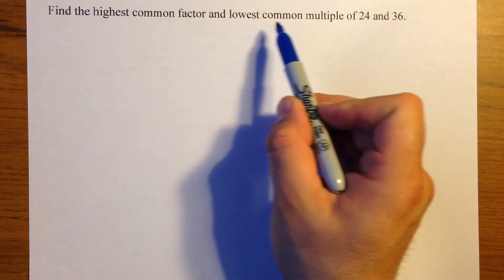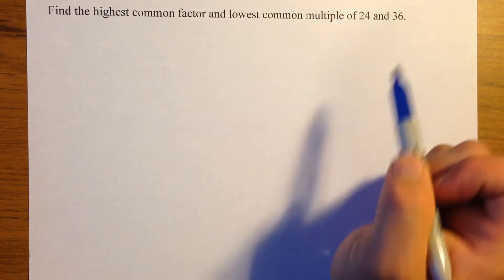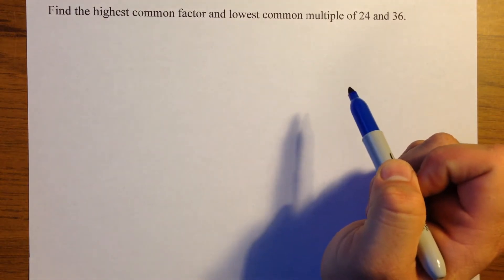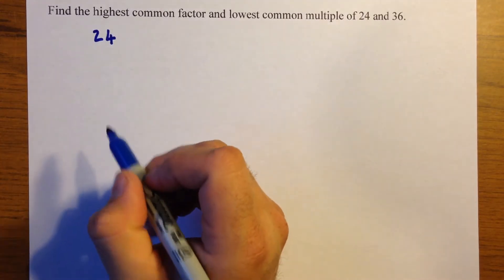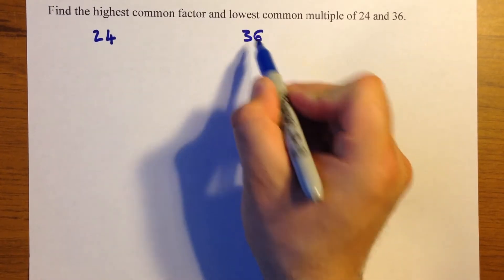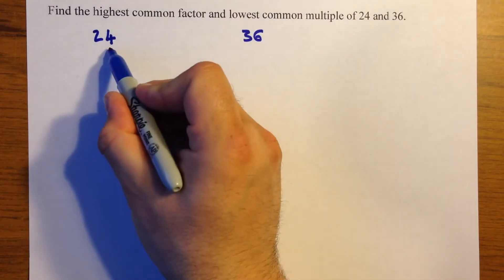Find the highest common factor and lowest common multiple of 24 and 36. So the first thing we need to do is break 24 and 36 into the product of their prime factors.